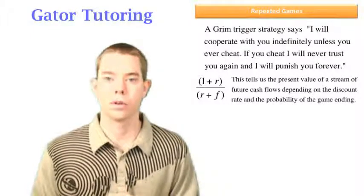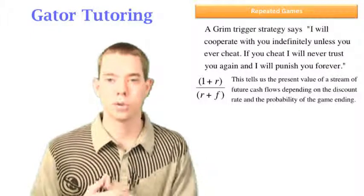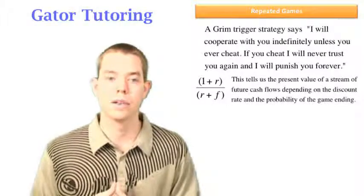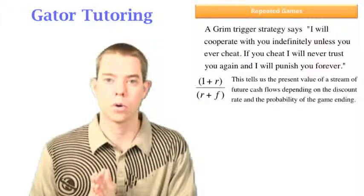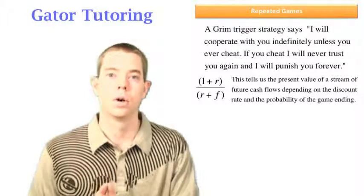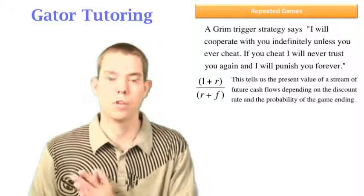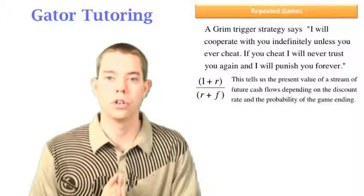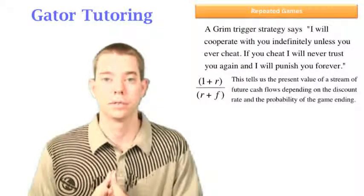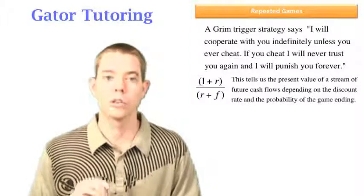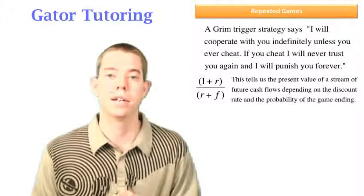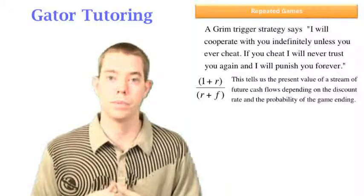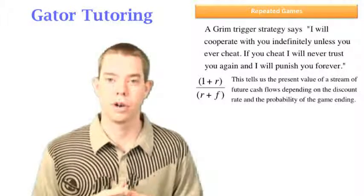Remember, from finance, the discount rate told us that a dollar today isn't worth a dollar tomorrow, time value of money. And we usually had t in our equation, which was time. Well, now we don't know when the game is going to end, we don't know what period we're going to be discounting back. Instead, we just know the probability of the game ending. So we're using the discount rate and the probability of the game ending to bring a future stream of identical cash flows back to the present value.